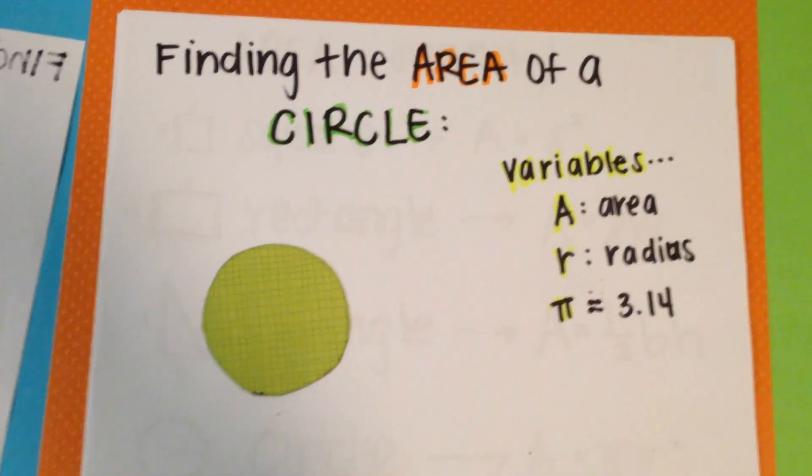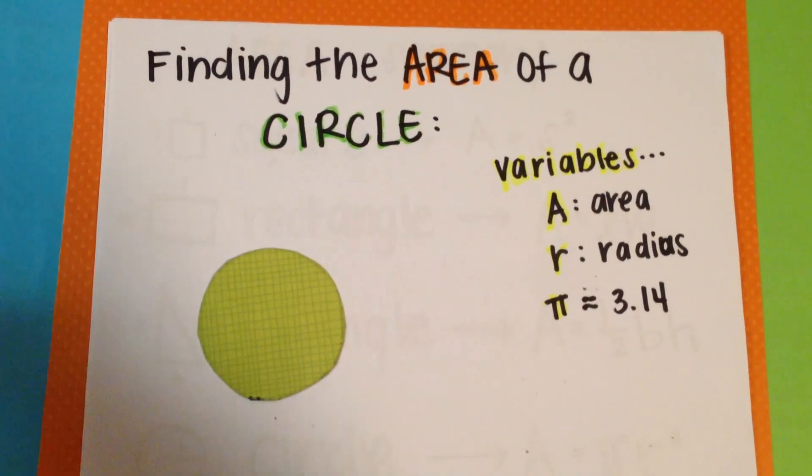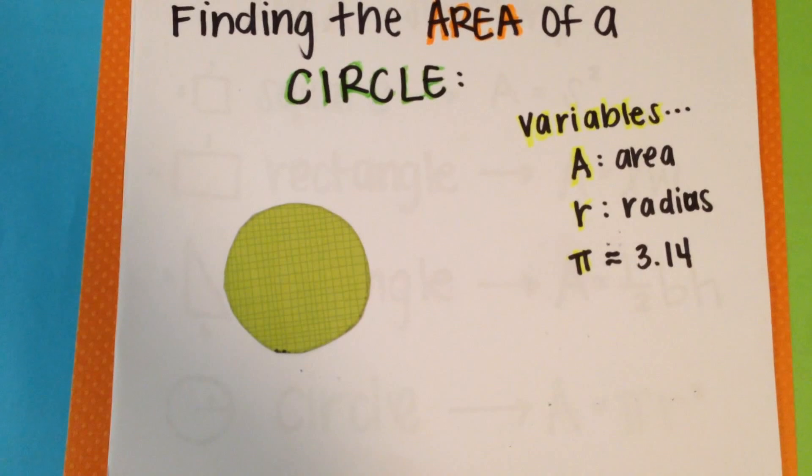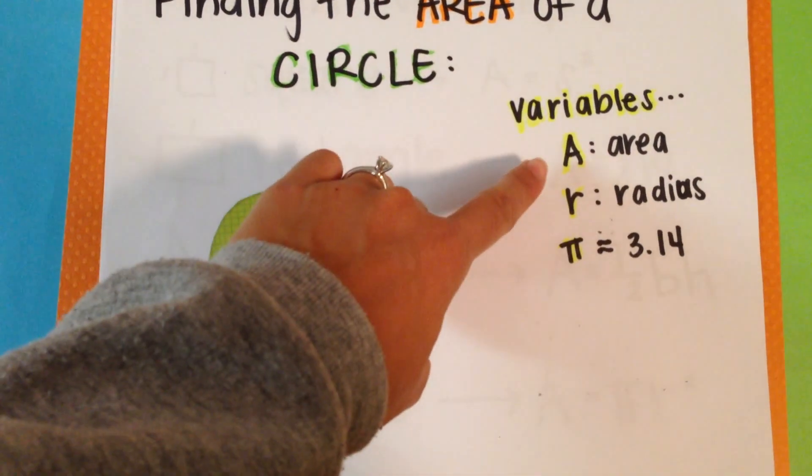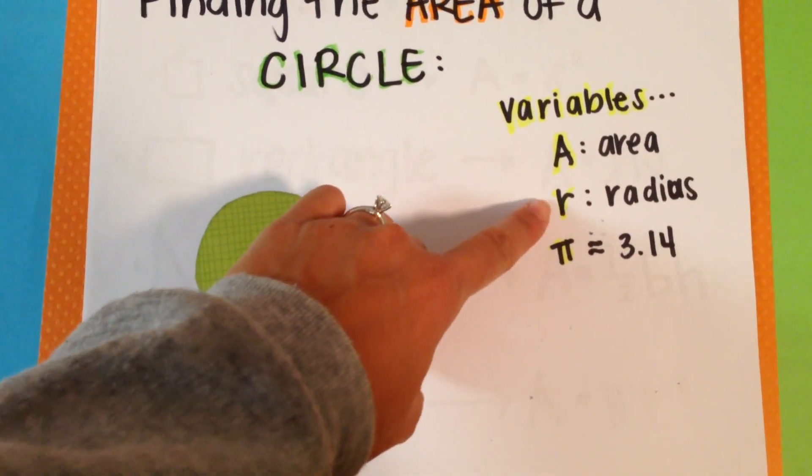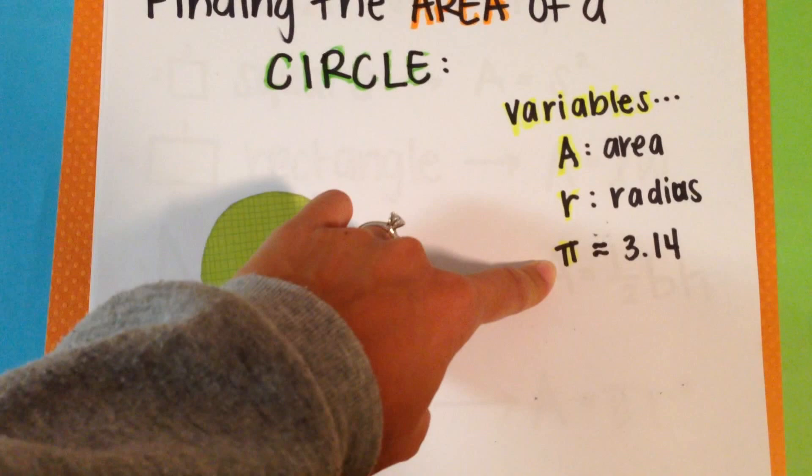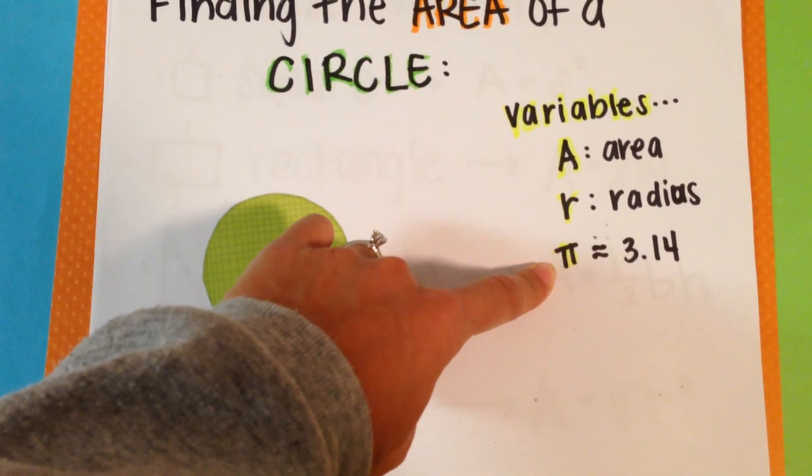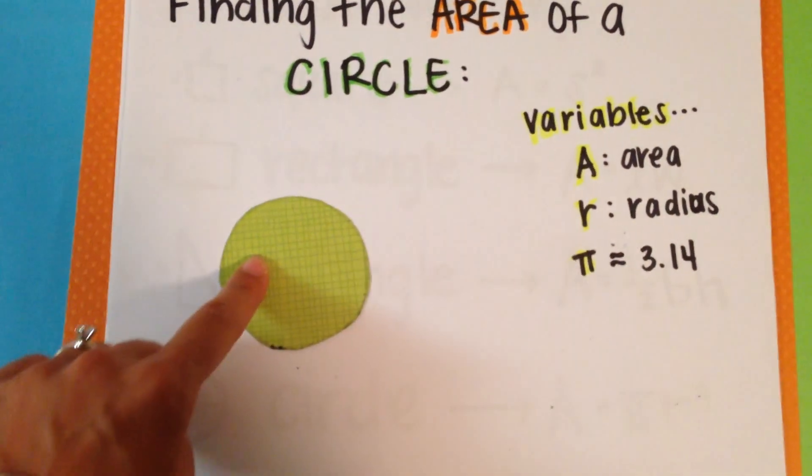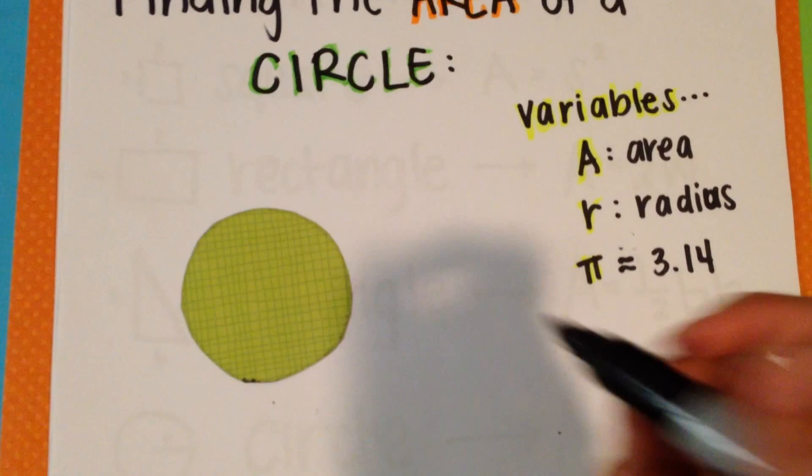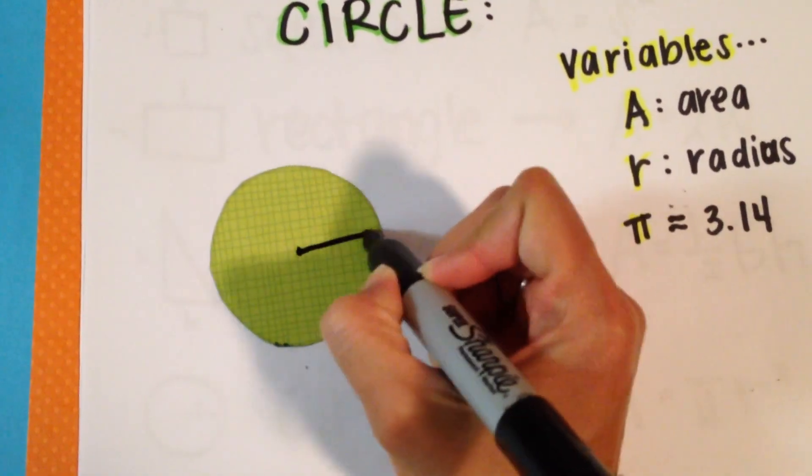Now let's find the area of a circle. The variables that we need are A for area, r for radius, and the constant pi, which is about 3.14, and our circle. We label our circle from the center out is our radius, r.